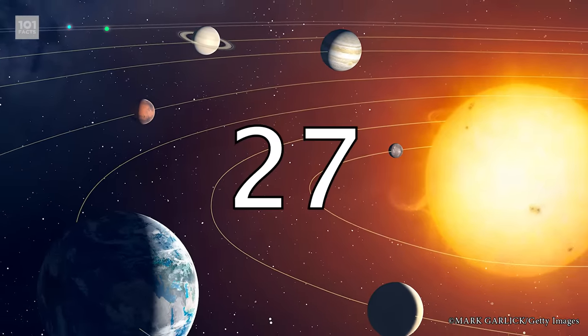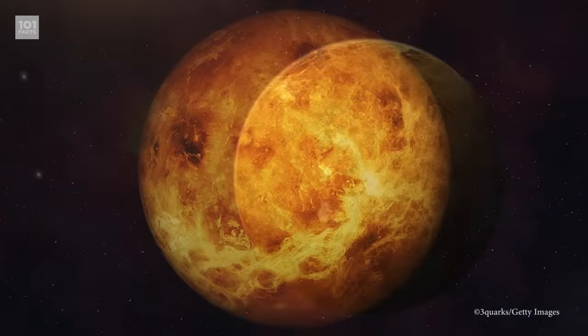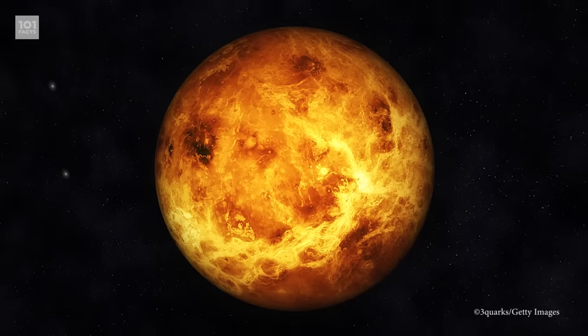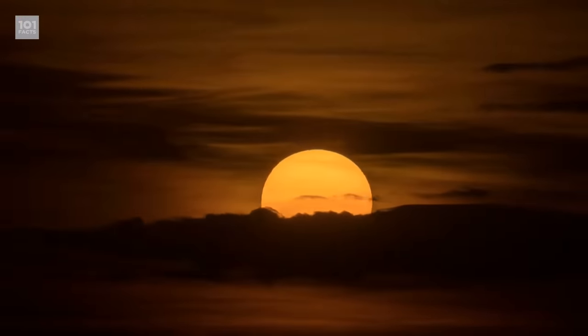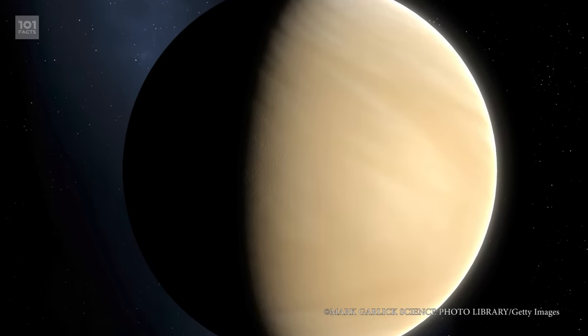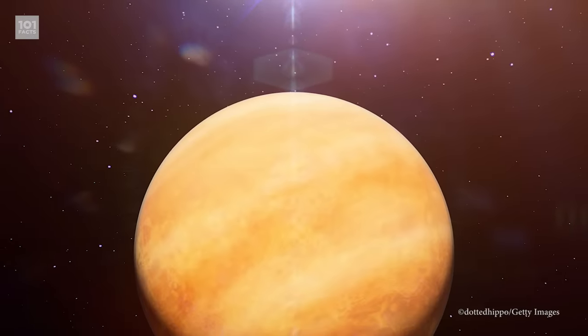It also spins really slowly. The slowest in the solar system, in fact. The Earth has a full rotation in around 24 hours, which is what makes a day. On Venus, a single day or planet rotation is 243 Earth days' worth.